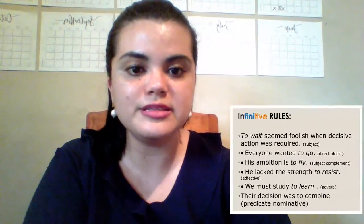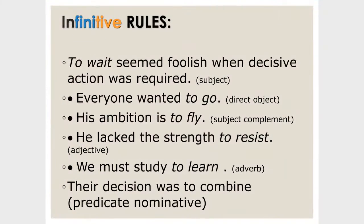Let's see some examples. 'To wait seemed foolish when decisive action was required' — here 'to wait' works as a subject. 'Everyone wanted to go' — that is a direct object. 'His ambition is to fly' — it is working as a subject complement; 'ambition' is the subject and 'to fly' is the complement. 'He lacked the strength to resist' — that is an adjective. 'We must study to learn' — it works as an adverb, answering why we study.